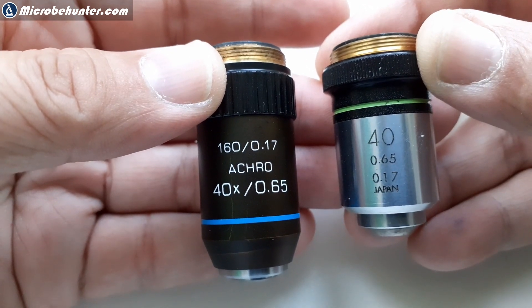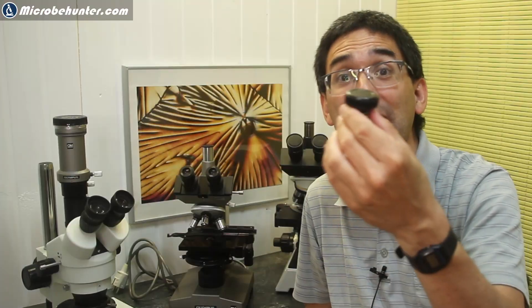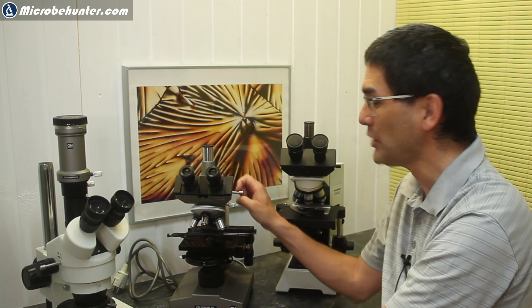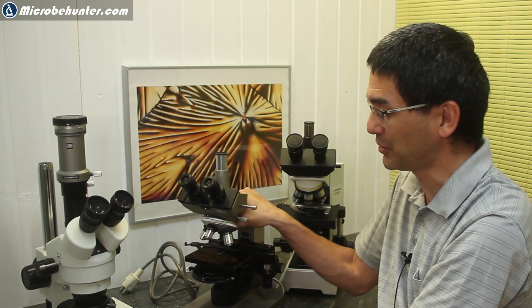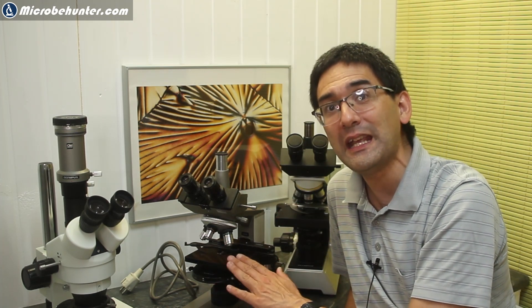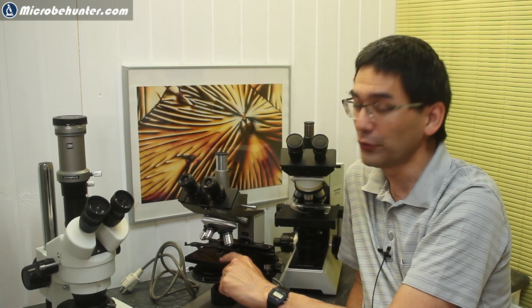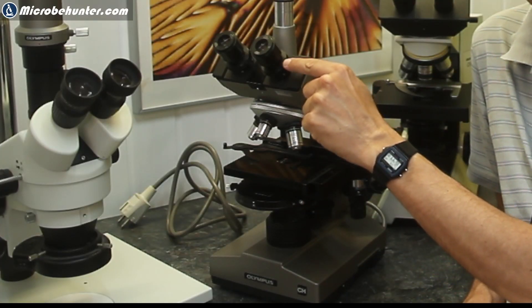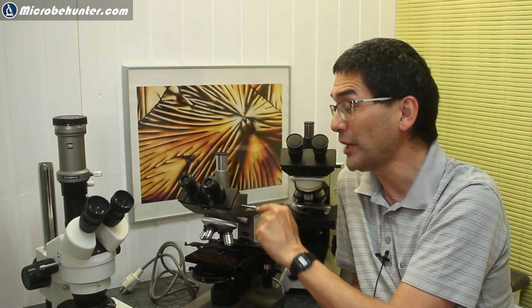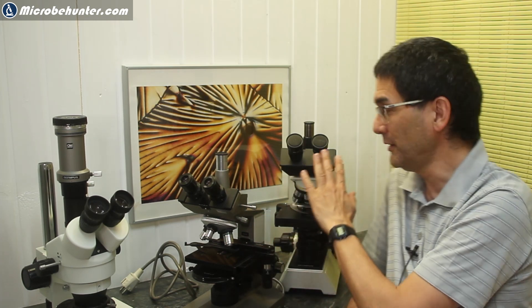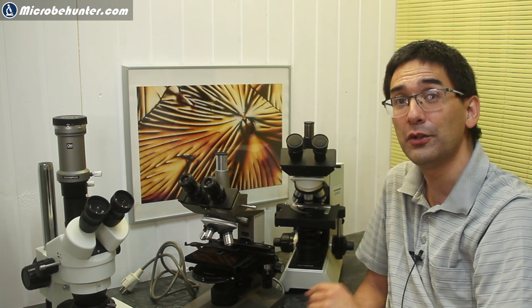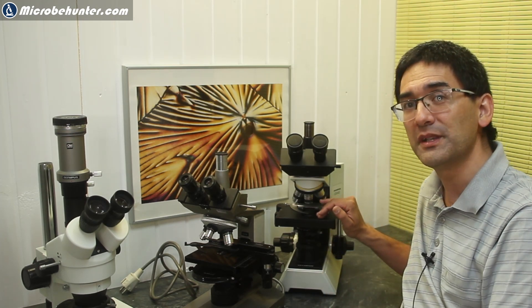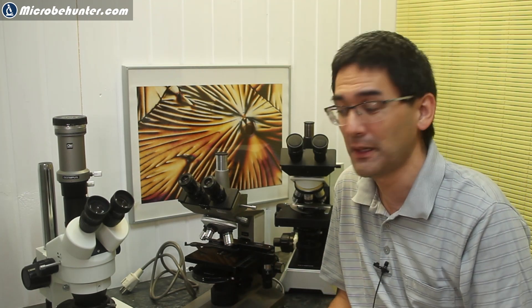The shorter one here has a conjugate distance of 185 mm, and this one, the longer one, has a conjugate distance of 195 mm. If you look, for example, at this Olympus CHA microscope from the 1980s, this microscope has a conjugate distance of 185 mm, and this means that the distance from the stage all the way to the place up here where the image is projected is 185 mm. And the other Olympus microscope I have over here has 195 mm, so it's slightly larger.